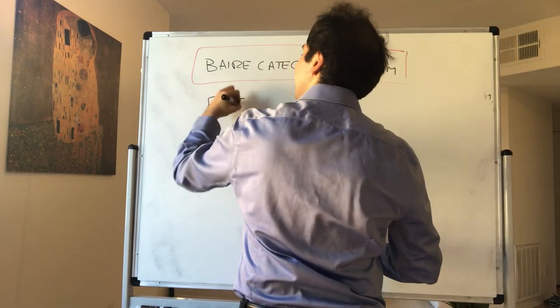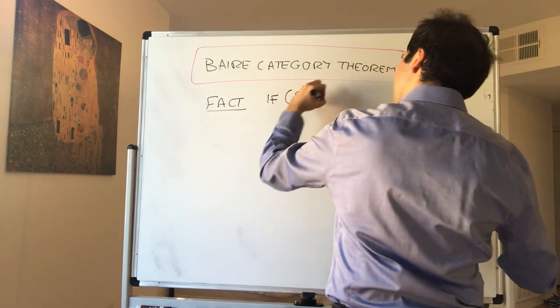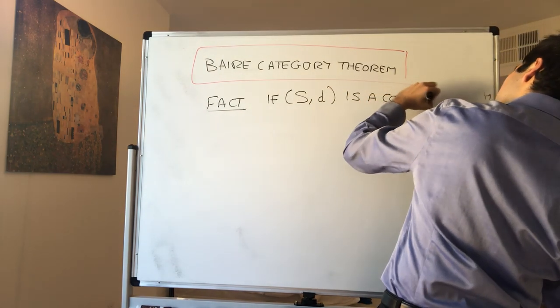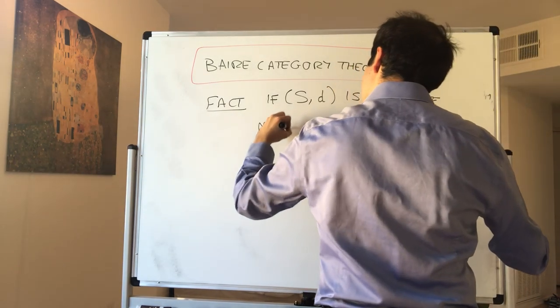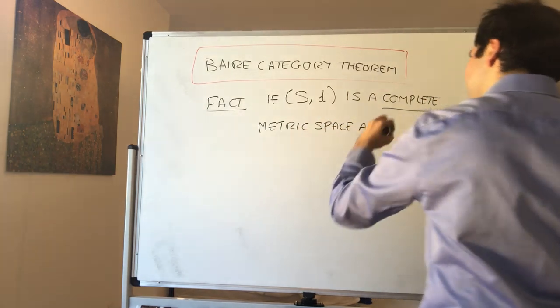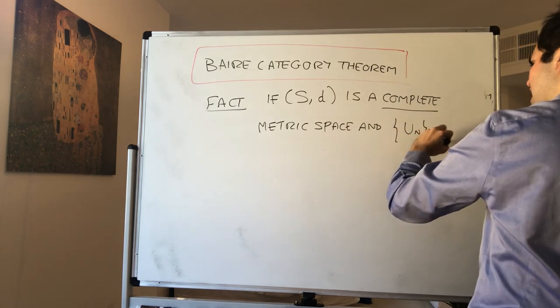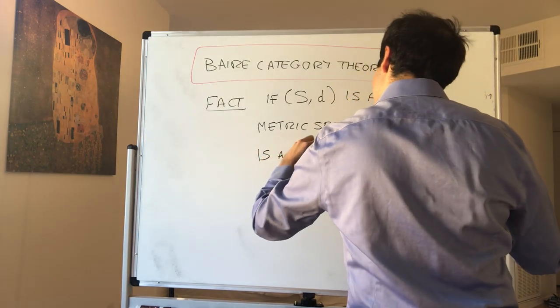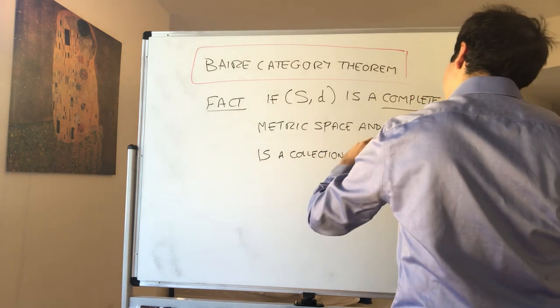Suppose S is a metric space that's complete. It's very important that it's complete. So if S with metric D is a complete metric space, and u1 up to un from n equals 1 to infinity is a collection, an infinite collection of open and dense sets.